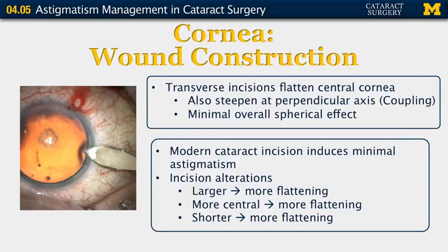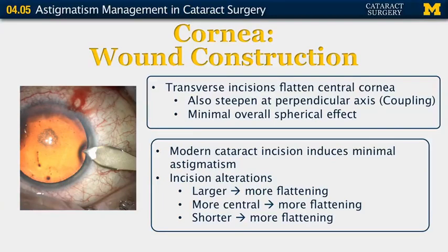The first thing you can do to affect corneal astigmatism is to change your wound construction. A transverse incision will flatten the central cornea and steepen the cornea at a perpendicular axis, with minimal overall spherical effect but a real effect on astigmatism. In modern cataract surgery, incisions tend to induce minimal astigmatism, but you can alter the way you make your incision to cause more changes to corneal curvature. Making a larger incision, making your incision more central, or making a shorter tunnel can all lead to more flattening, and you can make these alterations on a patient-per-patient basis.